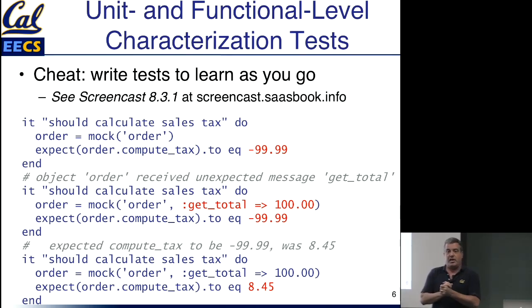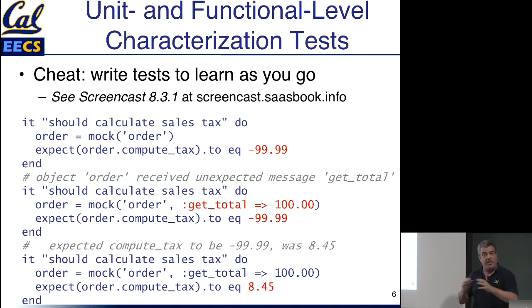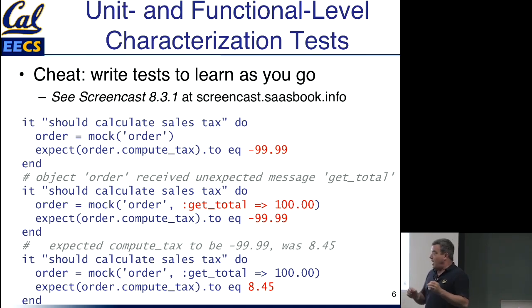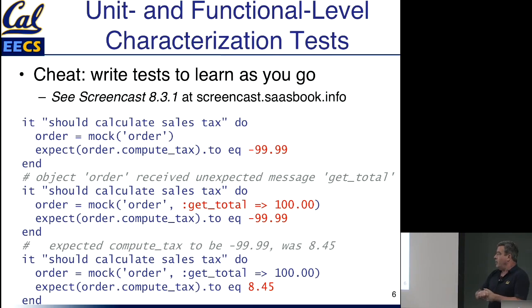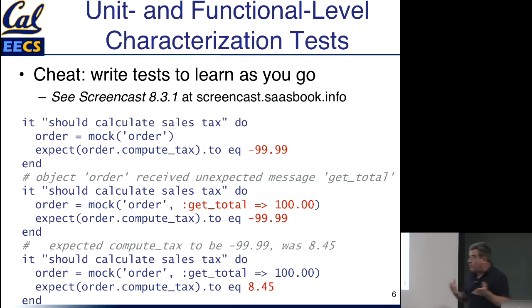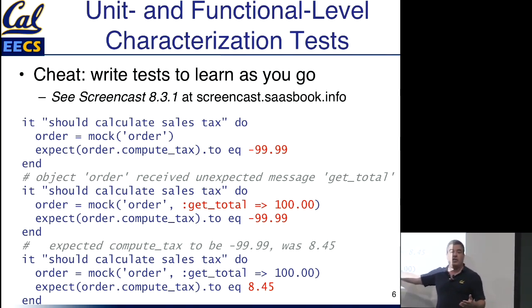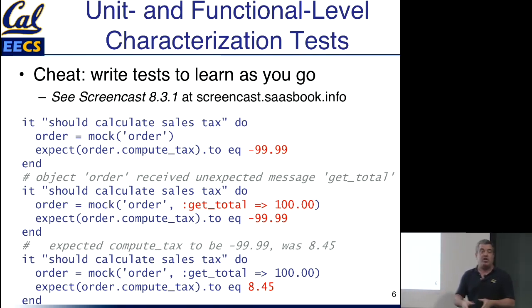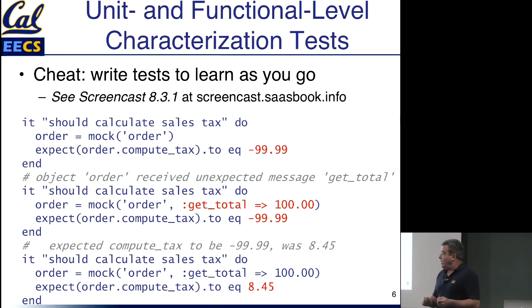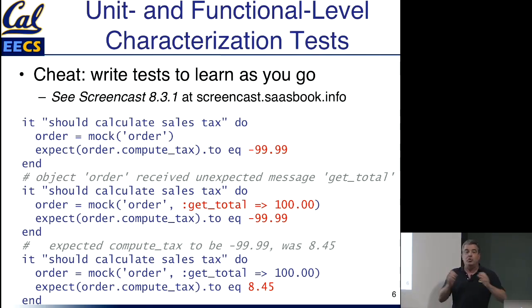That's the general idea of a characterization test — you get the app to do what it does now, whatever that is, even if it's buggy. At whatever level, whether it's the Cucumber level as seen by the user or calling individual methods that rely on helper methods, as you get the app to reveal its behavior you capture it and hardwire it into the test. A day may come when this test is no longer useful because you've had to rewrite the method, but in the meantime it's scaffolding that assures you haven't changed what the app does now — if you do, your tests will tell you about it.